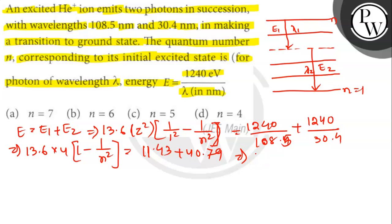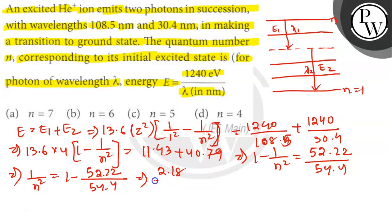So it will be 1 minus 1 by n square which is 52.22 divided by 54.4. So 1 by n square equals to 1 minus 52.22 divided by 54.4. So it will be 2.18 divided by 54.4 is 1 by n square.